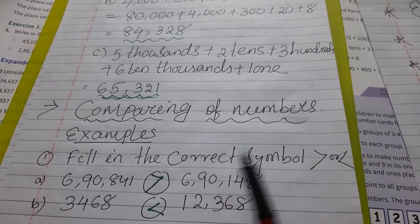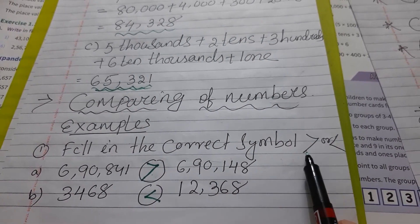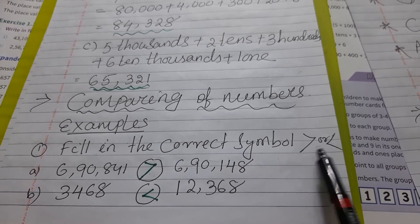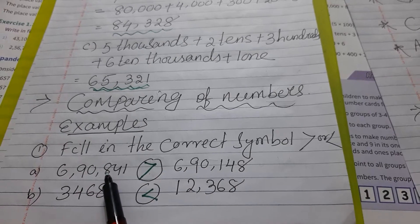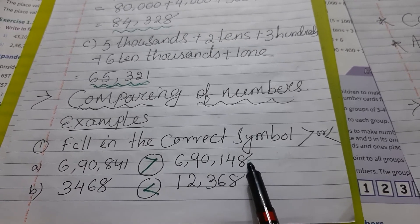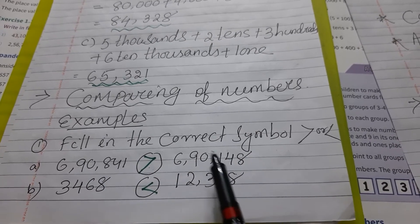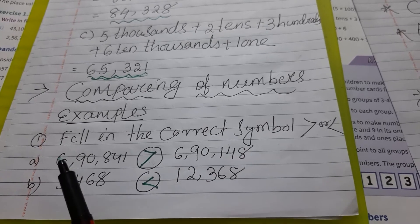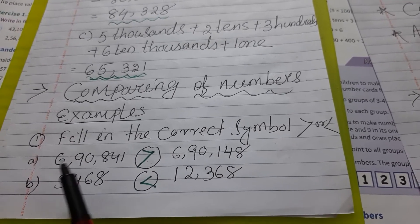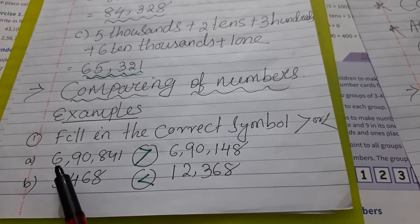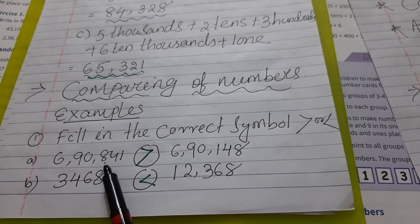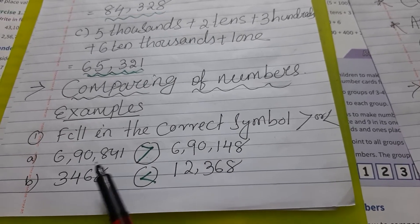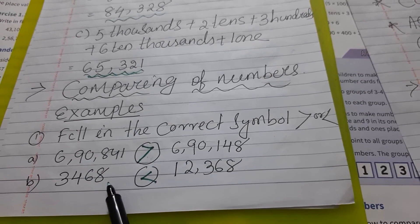Now, comparing numbers — how to compare two numbers using greater than and less than symbols. We fill the circle with these symbols. Example: six lakh ninety thousand eight hundred forty one versus six lakh ninety thousand one hundred forty eight. First, check the number of digits in each number. If the digit count is the same, compare from the left side. The first three digits are the same; the hundreds digit differs — eight hundred versus one hundred — so the first number is greater than the second. Put the greater than symbol.